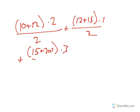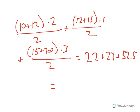And then you add that to 15 plus 20 times by 3, which is the delta X for that, over 2. And that equals 22 plus 27 plus 52.5, which equals 101.5.